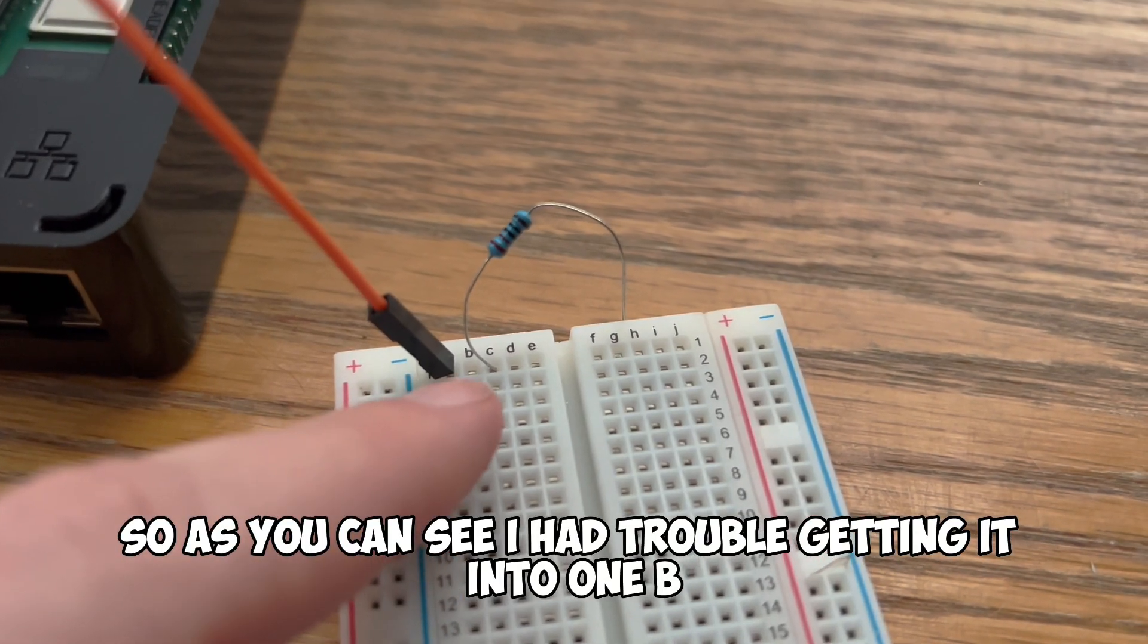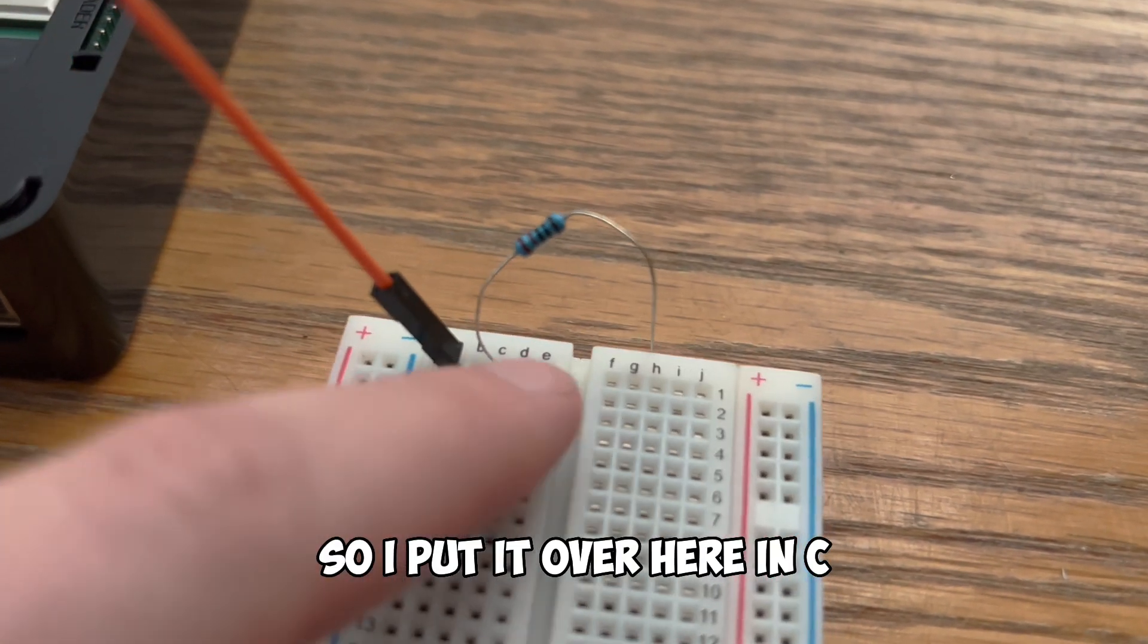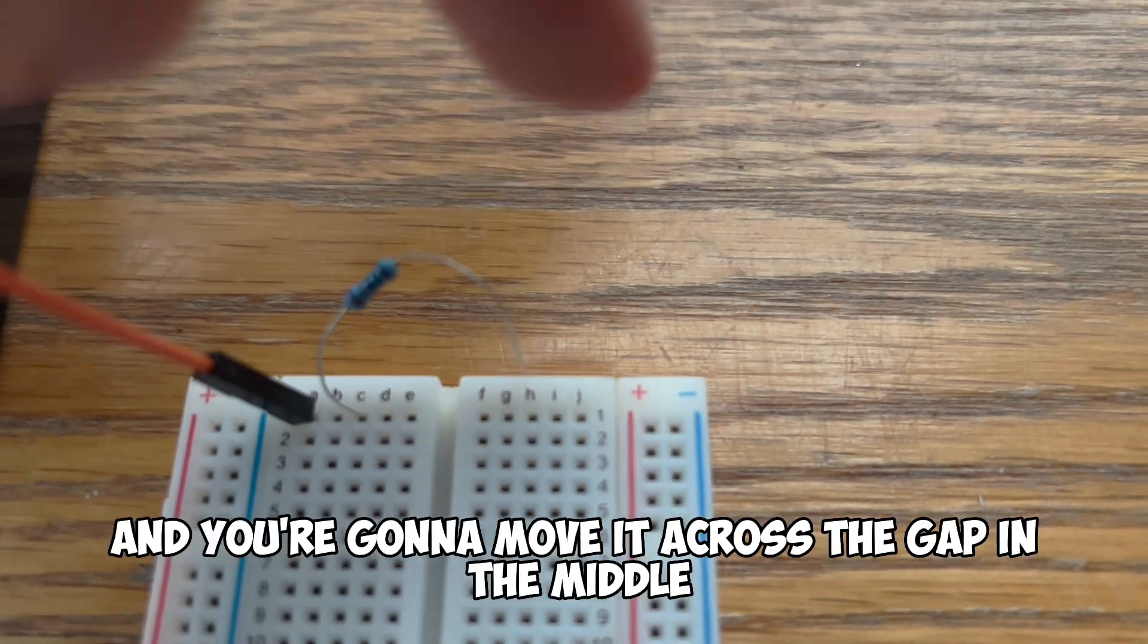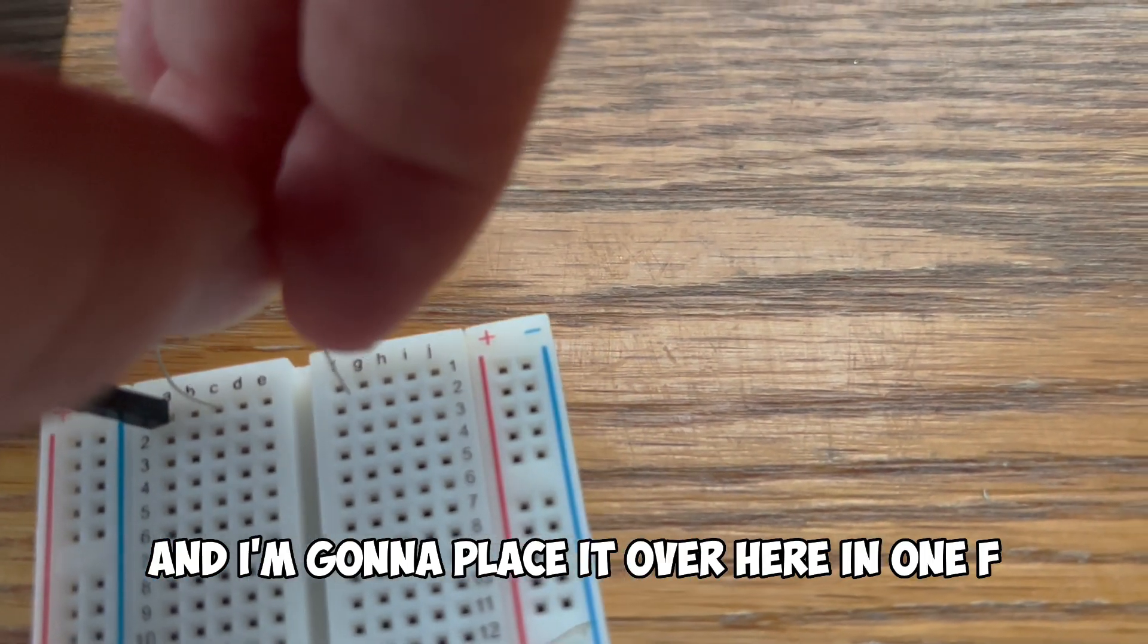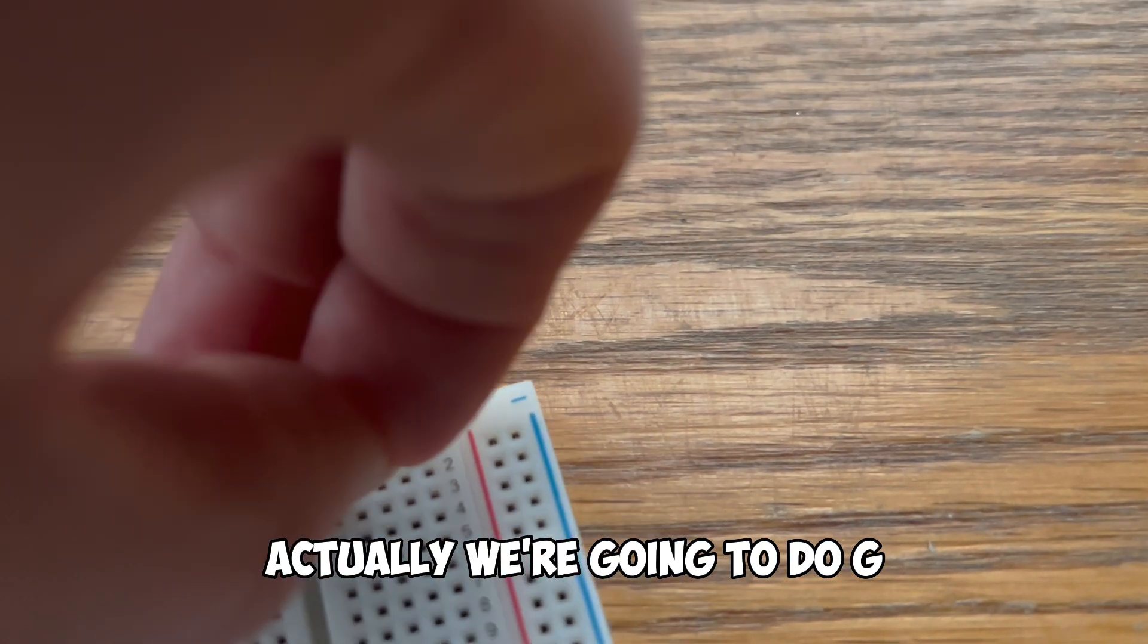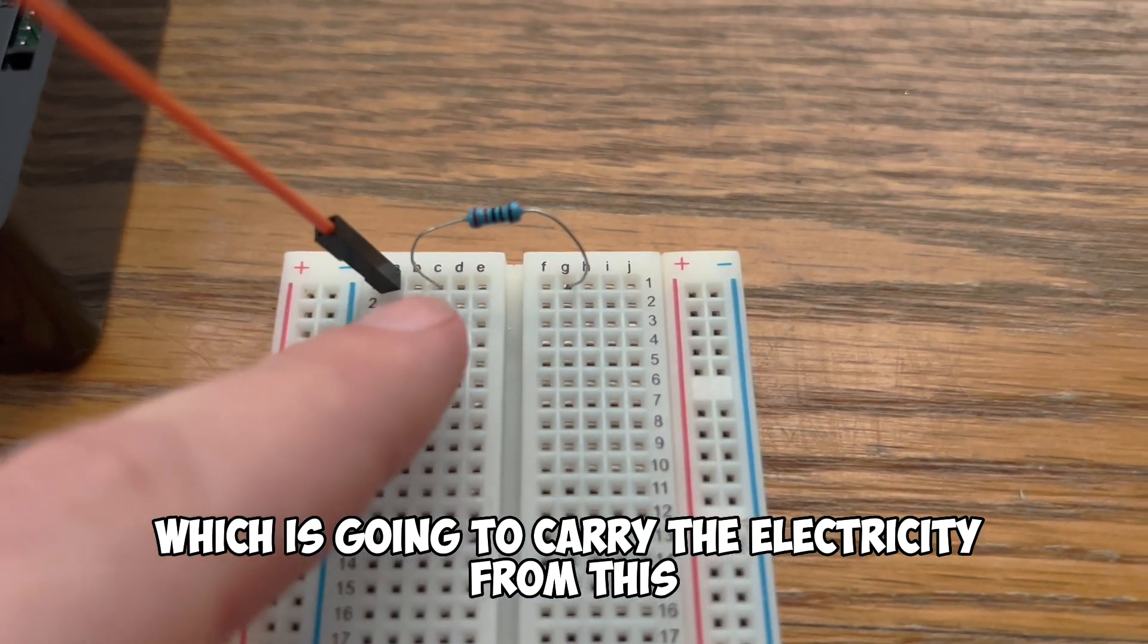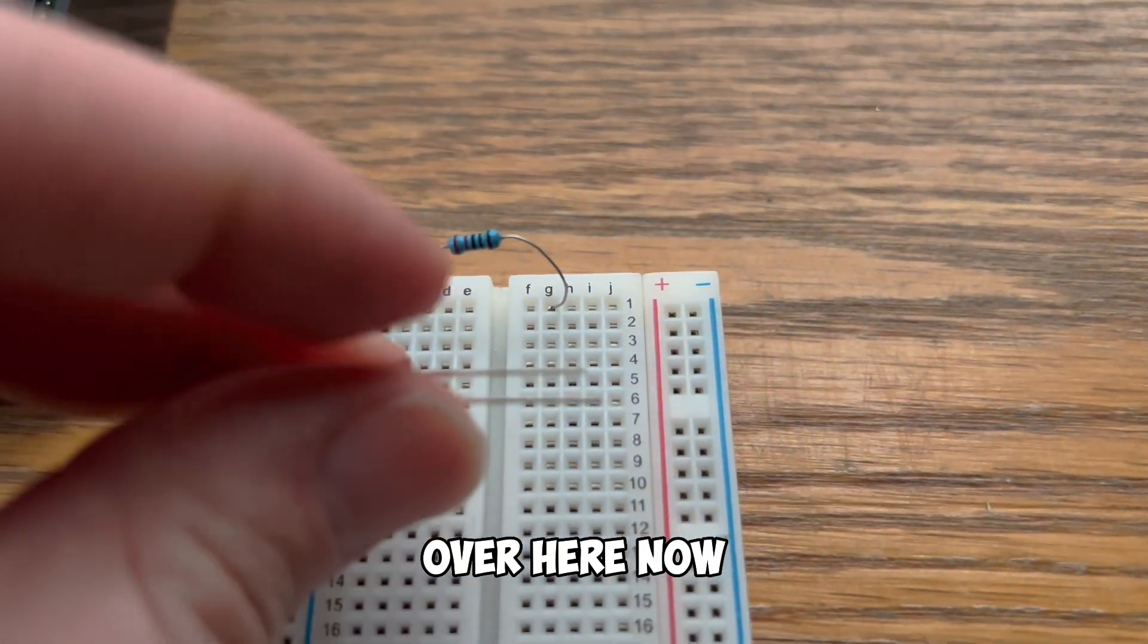So as you can see I had trouble getting it into 1B so I put it over here in C. As long as it's in the same horizontal row it will all be connected. Then you're going to take the other side and you're going to move it across the gap in the middle and I'm going to place it over here in 1F, the first row in the prong. Actually we're going to do G. It's all the same. And now I have my resistor which is going to carry the electricity from this all the way to the other side and this is where we're going to now put in our LED over here.